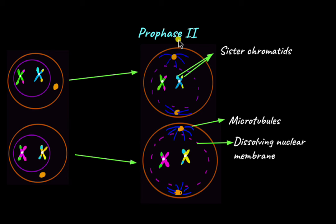At the end of prophase 2, the nuclear membrane has completely dissolved and the microtubules have formed and attached themselves to the kinetochore of the sister chromatids. The next stage that follows is metaphase 2.